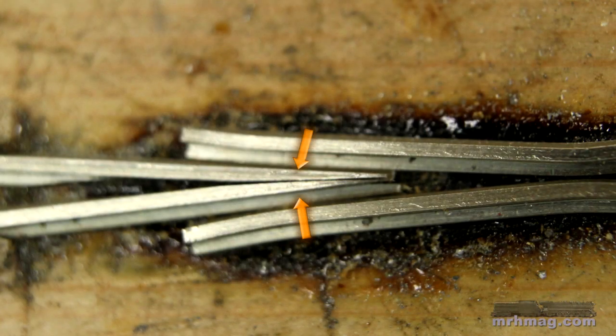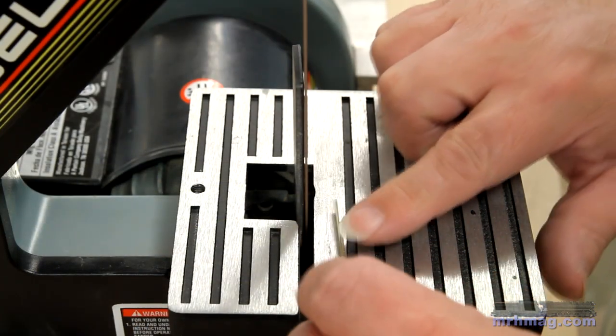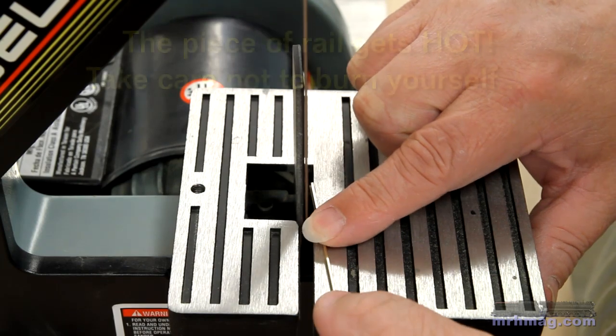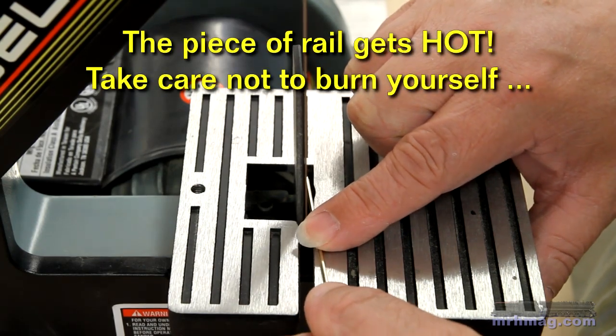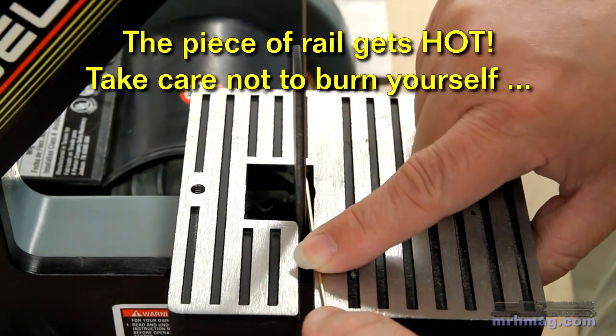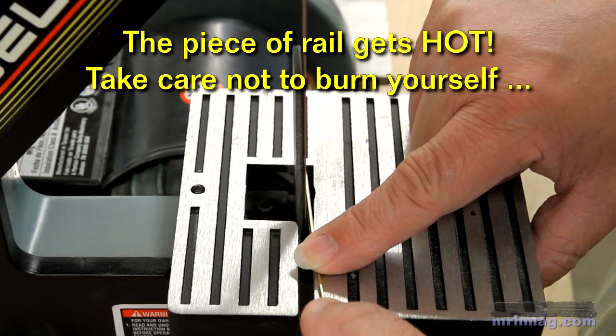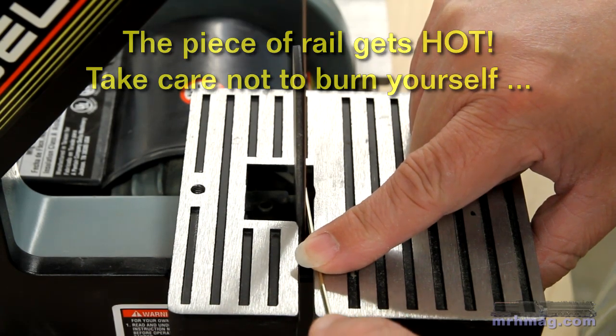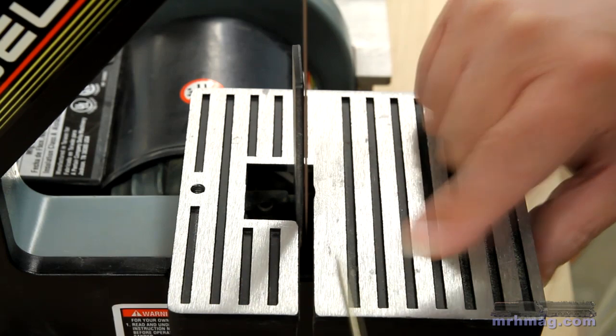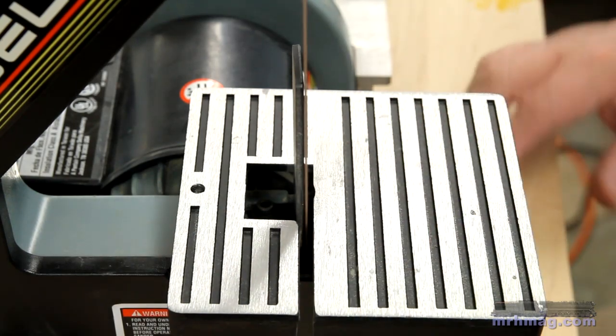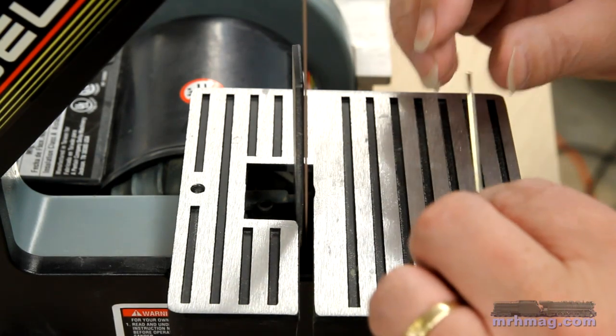The frog rails need to be beveled to make a nice frog point. I'll use the one inch belt sander to do the beveling. Since there are no moving parts in the frog, these rails don't need sanding with the 400 grit paper.